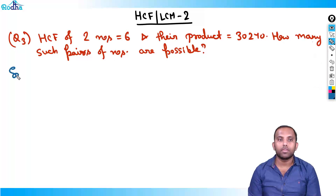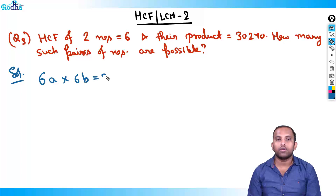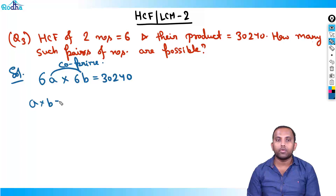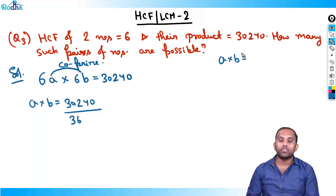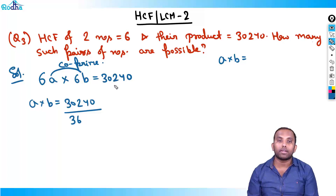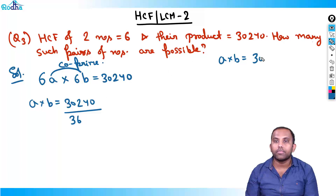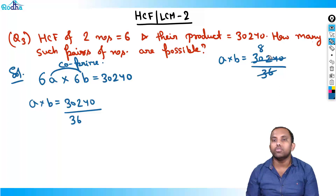The funda is simple: HCF of two numbers is six, so the numbers have to be 6a and 6b, and their product is 30240, where a and b have to be co-prime. So a into b equals 30240 divided by 36.